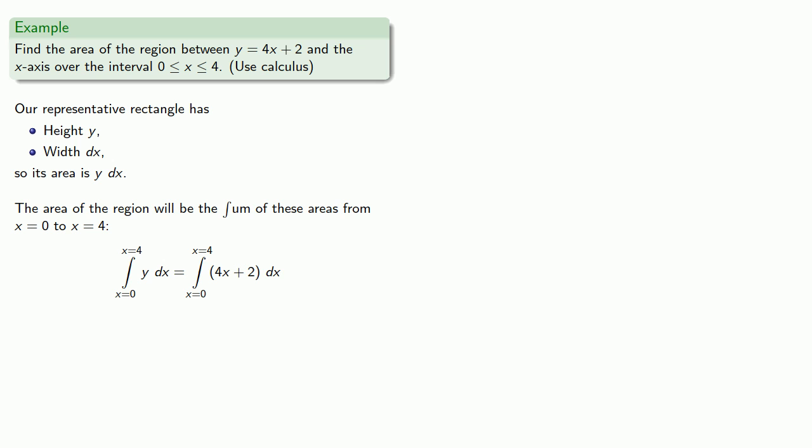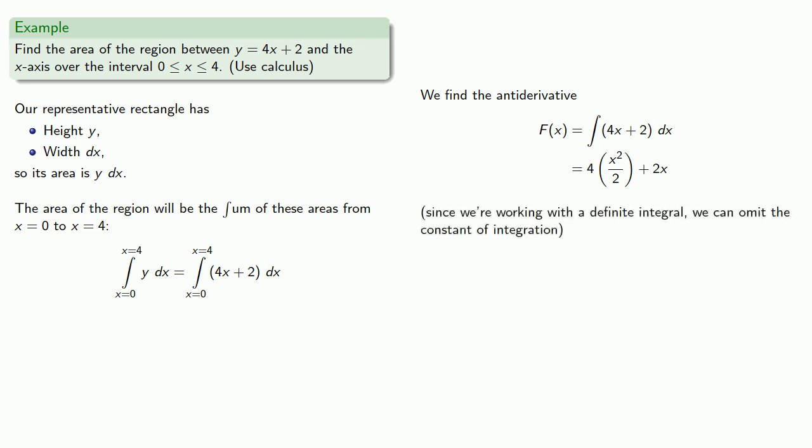And now we can apply the fundamental theorem of calculus. We'll find our antiderivative of 4x plus 2, and since we're working with a definite integral we can omit the constant of integration.